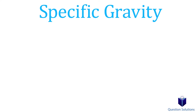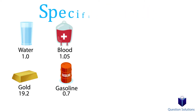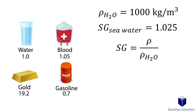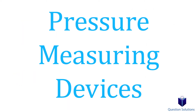Sometimes we need to figure out density using specific gravity. Specific gravity is simply the density of a substance given relative to the density of a reference substance — most of the time, water, which has a density of 1000 kg/m³. For example, if the specific gravity of seawater is 1.025, we use the equation: SG = rho / rho_water. Plugging in 1.025 for SG and 1000 for the density of water gives us a seawater density of 1025 kg/m³.